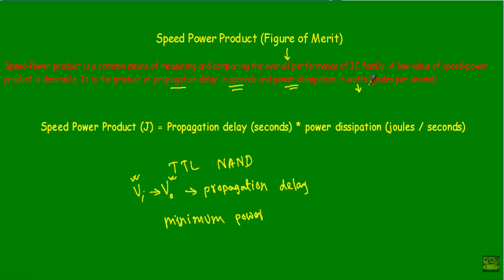The unit of propagation delay is seconds and the unit of power dissipation is watts, which can be written as joules per second. Therefore the speed power product has units of seconds × joules per second, and the seconds cancel, giving a unit of joules.